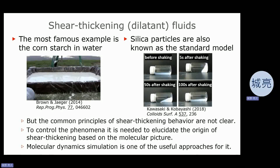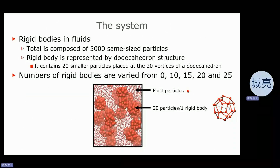We use molecular dynamics simulation to elucidate the origin of shear thickening from the viewpoint of the molecular picture. The systems are composed of 3,000 same-size particles. A rigid sphere is represented by a dodecahedron structure. Each rigid body contains 20 smaller particles placed at the 20 vertices of a dodecahedron. The positions of the particles in the dodecahedron were optimized to eliminate any influence on the viscosity calculations. The number of rigid bodies considered in this study were 0, 10, 15, 20, and 25.